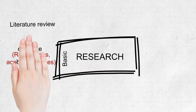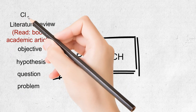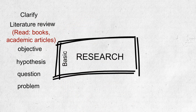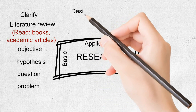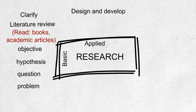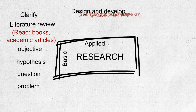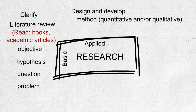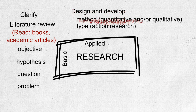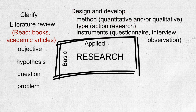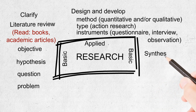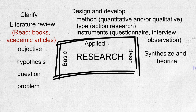After clarifying the research topic and its importance, you will have to do applied research. During this step, you will need to design and develop instruments appropriate for the method and type of your research. For example, if you are planning action research using a combined method, questionnaires, interviews, and observations might be the instruments used to collect data.